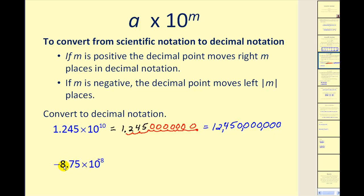In the second example, we're multiplying negative 8.75 times 10 to the power of negative 8. Multiplying by a negative power of 10 will make the number in decimal form less than negative 8.75, so we have to move the decimal point left eight places.